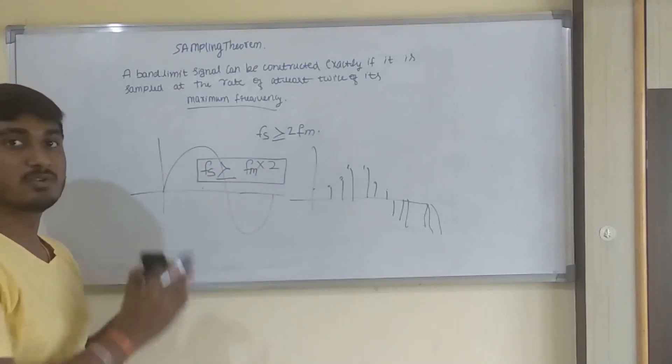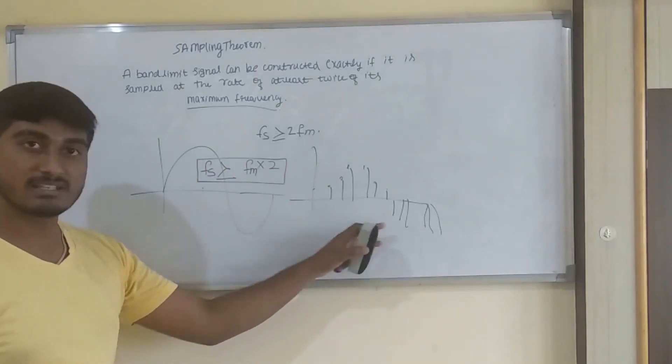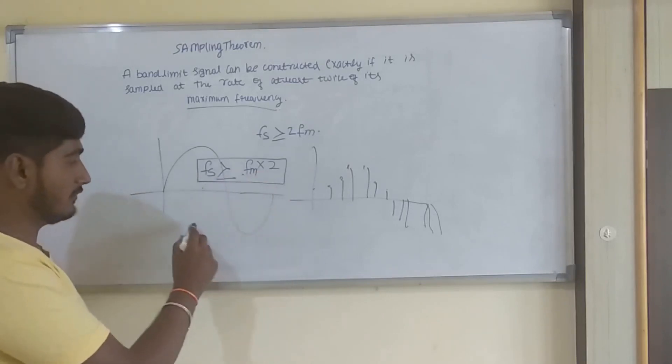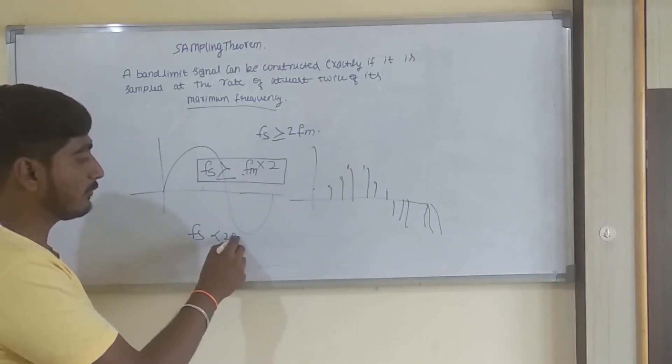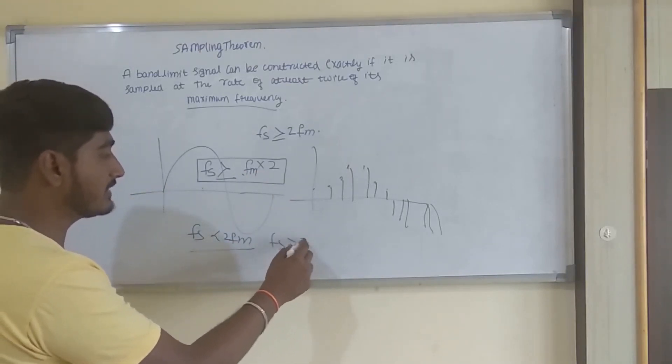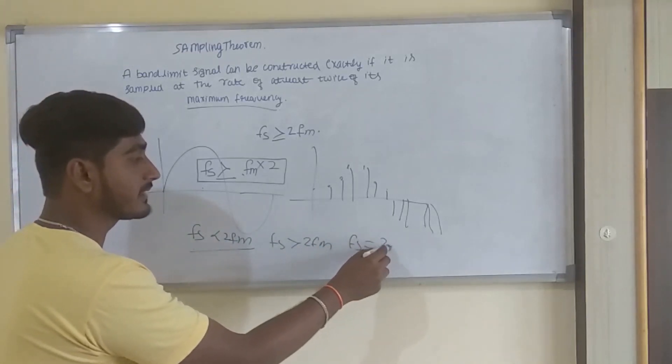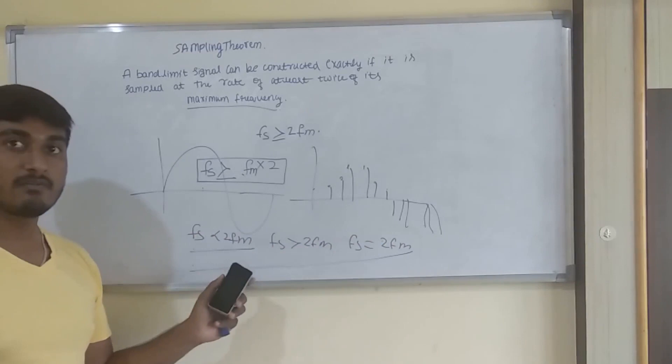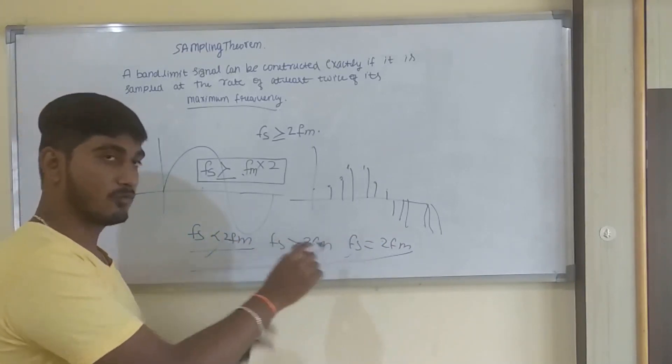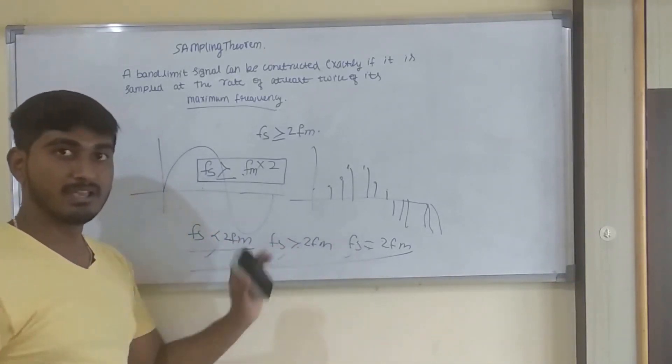What happens if it doesn't meet this criteria, which means here Fs will be less than 2Fm? What happens if we do this, and what happens if we make it much greater than 2Fm, and what happens if we make it exactly 2Fm? We will be studying and proving all these cases.